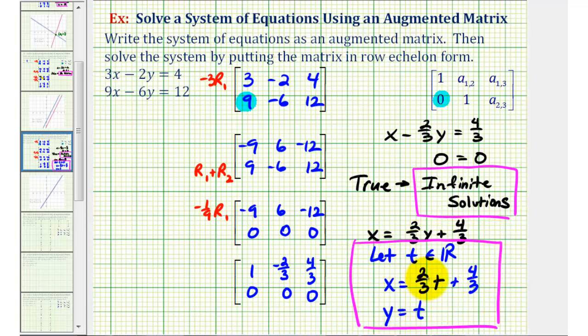If we wanted to, we can express this as an ordered pair, where the x-coordinate would be 2/3t + 4/3, and the y-coordinate would be t, again, where t is any real number.